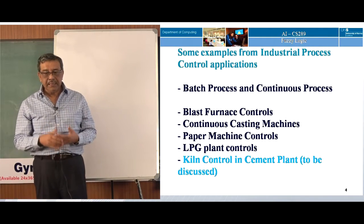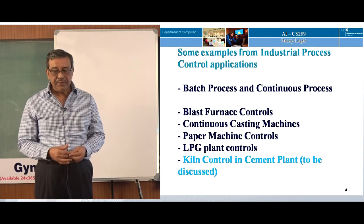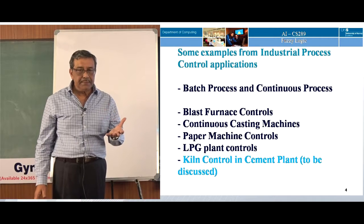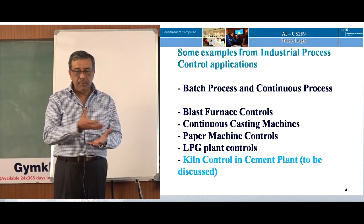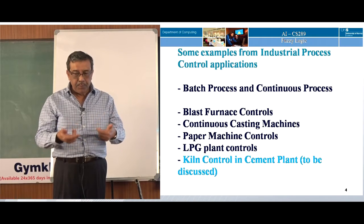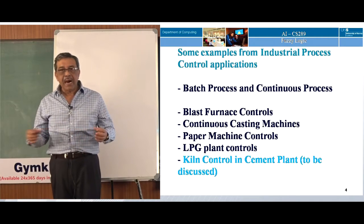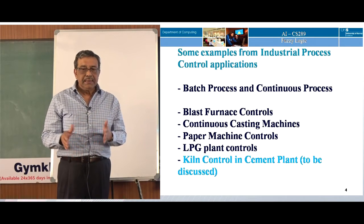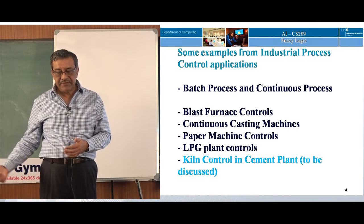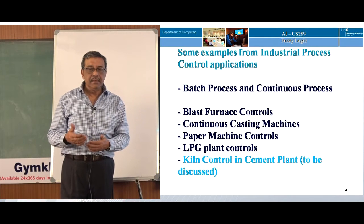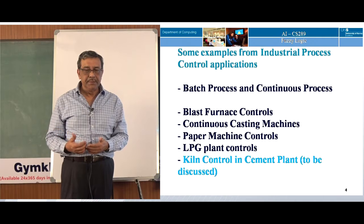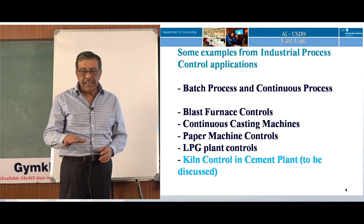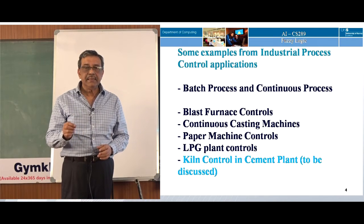Now let us look at continuous casting machines. The input to the casting machine is molten metal, carried in a ladle and poured into the machine. The output is bars or slabs. In between, the bar comes out of a mould, gets cooled, gets cut, and finally comes out of the machine. From the output, you desire that the bar should be regular in shape, of a specific size, and should not bend when it cools down. These are quality things which you control by changing the controllable variables.